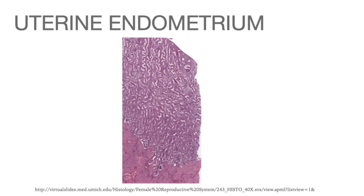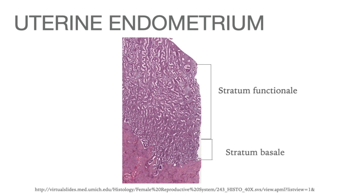At the end of each menstrual cycle, when the oocyte is not fertilized, two-thirds of the endometrium called the stratum functionale is shed, accompanied by extravasation of blood from the blood vessels of the stroma. This is the menstrual flow that continues for three to five days. The deeper portion of the endometrium, called the stratum basale, persists and regenerates the functionalis layer in the next menstrual cycle.